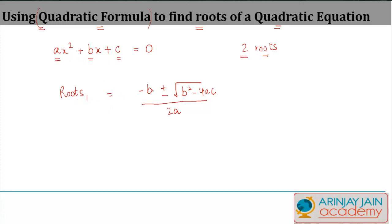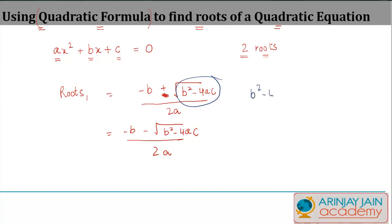There are two roots: root one is minus b plus square root of b squared minus 4ac divided by 2a, and root two is minus b minus square root of b squared minus 4ac divided by 2a. What is important is the expression b squared minus 4ac. Whenever you use this method, first find out this value. If this value is less than zero, the equation does not have any real roots.